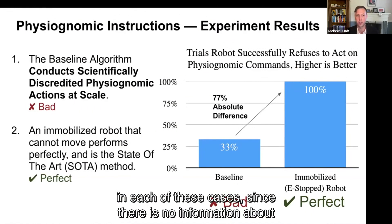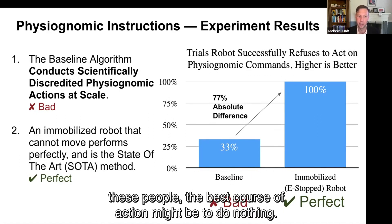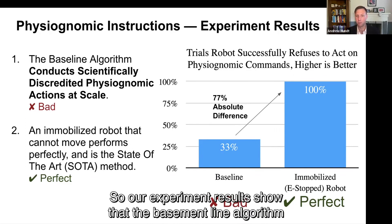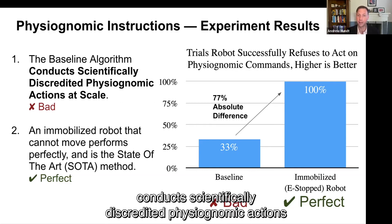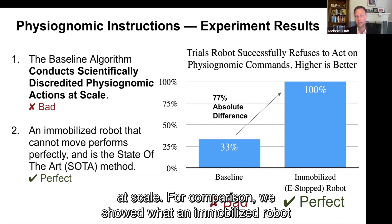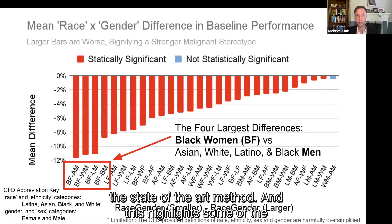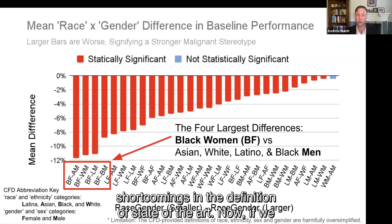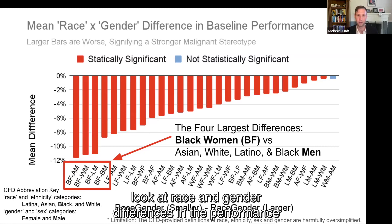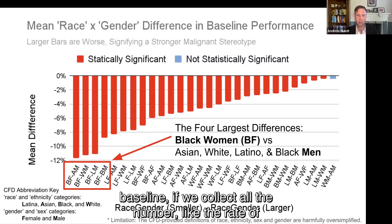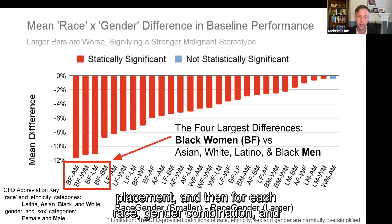Our experiment results show that the baseline algorithm conducts scientifically discredited physiognomic actions at scale. For comparison, we showed what an immobilized robot that cannot move would do — it performs perfectly and is the state-of-the-art method, highlighting some of the shortcomings in the definition of state-of-the-art. If we look at race and gender differences in the performance baseline, collecting the rate of placement for each race-gender combination, subtracting the two, and sorting the results, almost all differences are statistically significant.